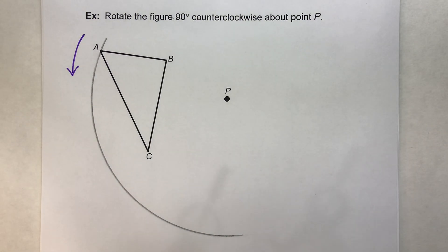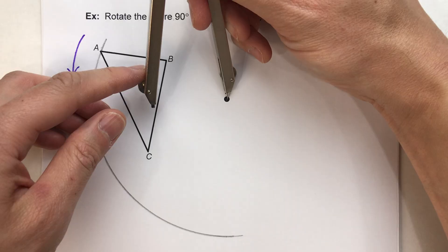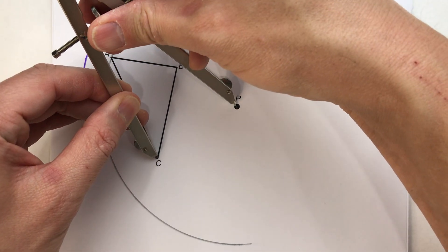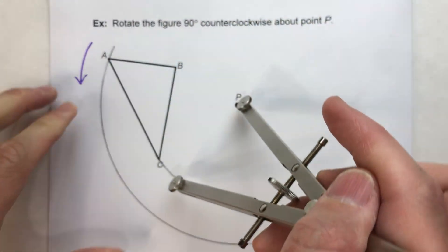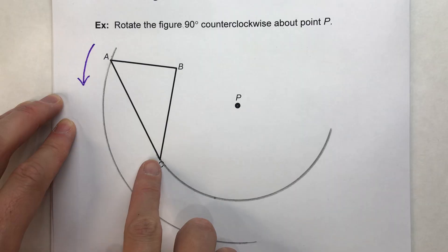And we could do the same thing with all the other points. So from P to C, I'll take that distance and swing an arc. So again, this is the path of point C.